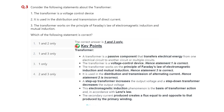Question three: consider the following statements about the transformer. First, the transformer is a voltage control device. Second, it is used in the distribution and transmission of direct current. Third, the transformer works on the principle of Faraday's law of electromagnetic induction and mutual inductance. The correct option is statements one and three. Since the transformer works on AC only — if connected to DC it will be damaged — statement two is incorrect. Statements one and three are correct.